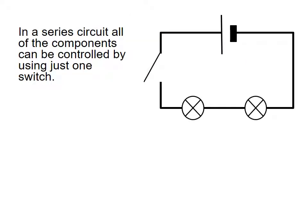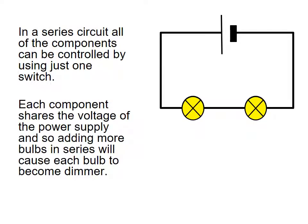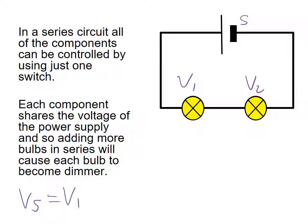In a series circuit all components can be controlled by just one switch, because it opens and closes the entire circuit — close the circuit and the lights come on, open it and they go off. Each component shares the voltage of the power supply: the supply voltage Vs equals the voltage across bulb one plus the voltage across bulb two. Adding more bulbs in series causes each bulb to become dimmer, because less energy is provided to each.